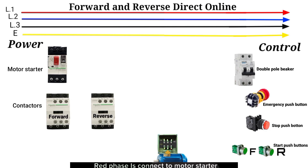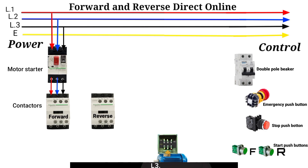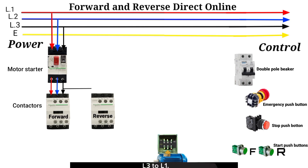Now let's start the wiring. Red phase connects to motor starter L1, blue phase to motor starter L2, black phase to motor starter L3. Motor starter output T1 connects to forward contactor input L1, T2 to forward contactor L2, and T3 to forward contactor L3.